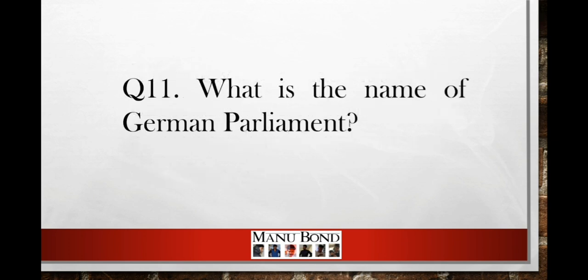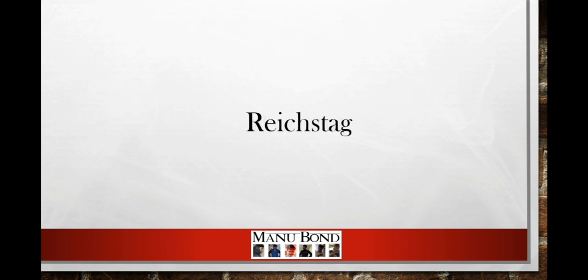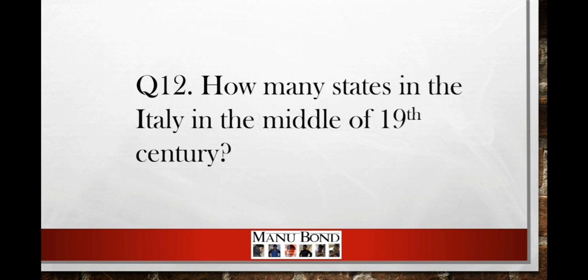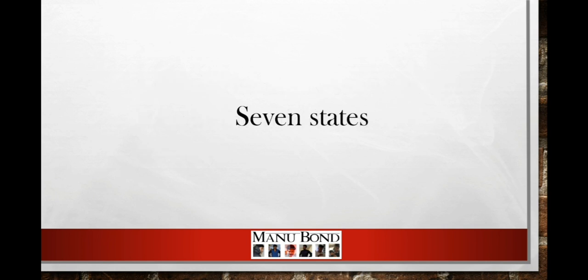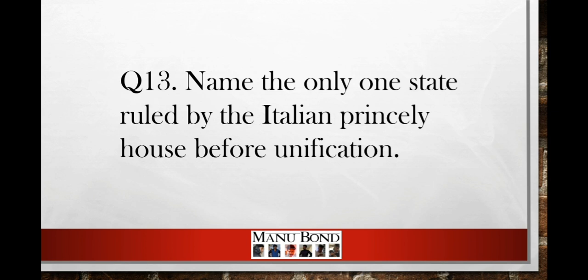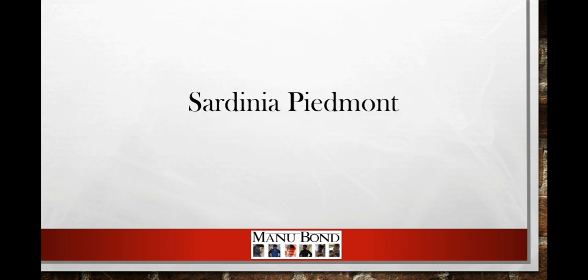Question number 11: What is the name of the German parliament? Answer: Reichstag. Question number 12: How many states were in Italy in the middle of the 19th century? Answer: 7 states. Question number 13: Name the only one state ruled by the Italian princely houses before unification? Answer: Sardinia, Piedmont.